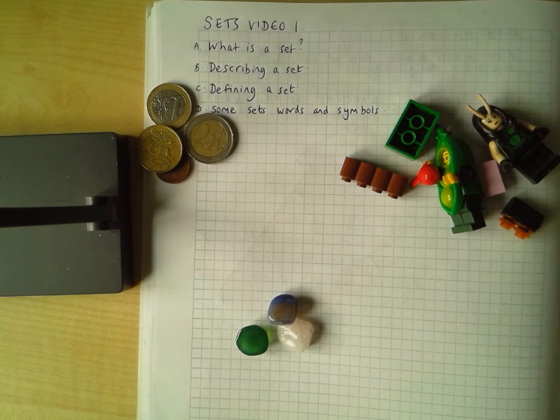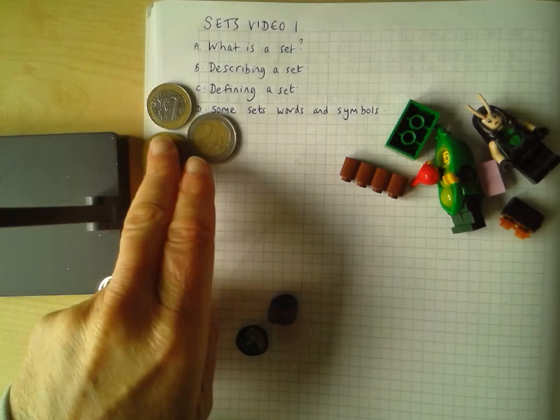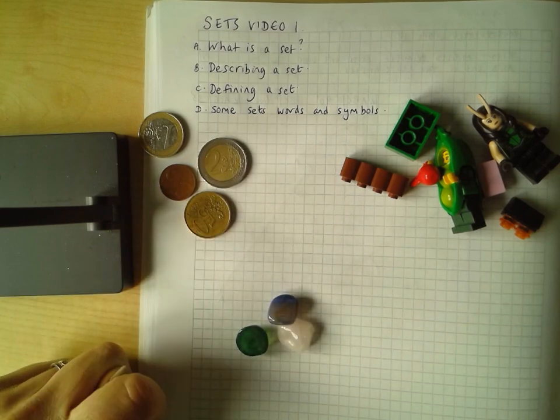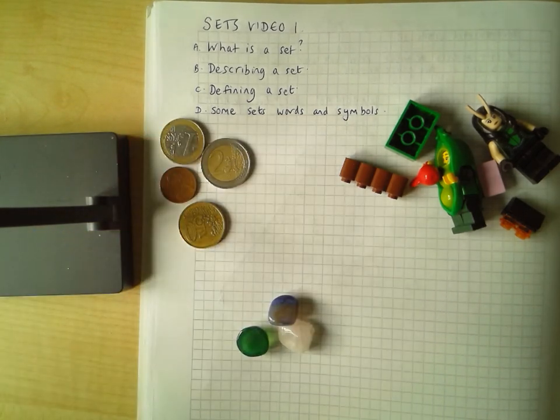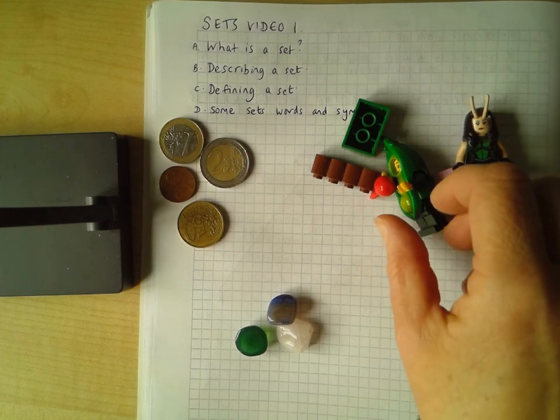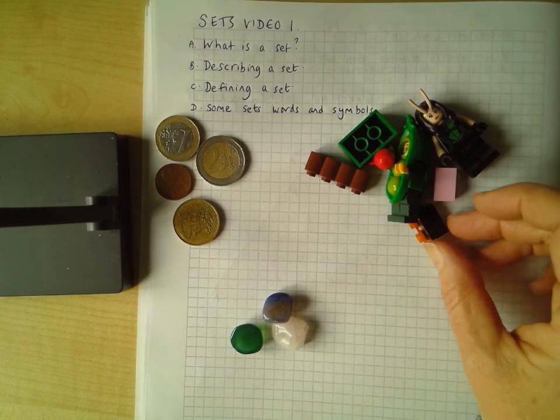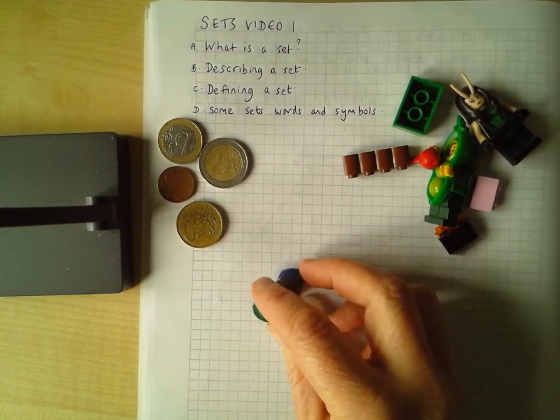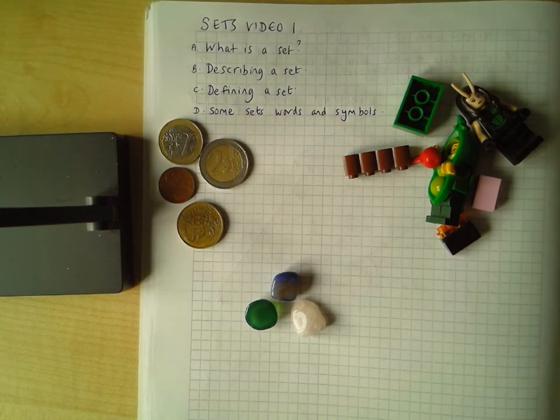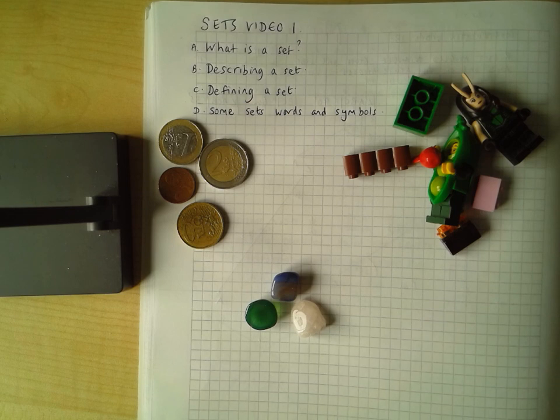So what you might do once you have a set is that you might just realize, first of all, that they have to be clearly defined. There has to be a reason why they're together. So for instance, this set here, I might describe as a set of Irish coins, or they're not even necessarily Irish, are they? Because there's a French coin. So a set of European coins. This might be a set of Lego pieces. I might want to say it's actually a set of small Lego pieces. And this might be a set of gemstones. So when we describe the set, we're saying what those sets, what those groups of elements, groups of items have in common.